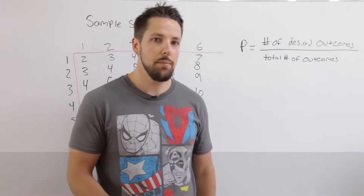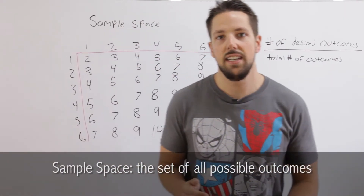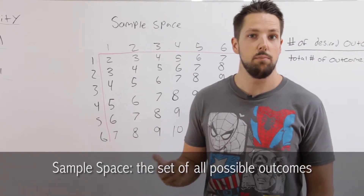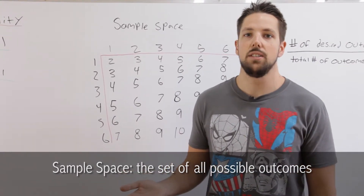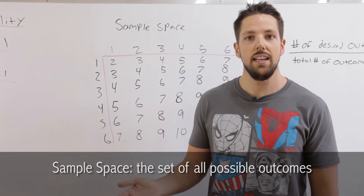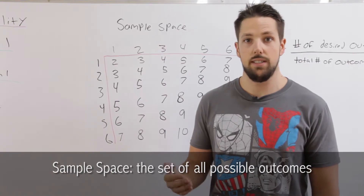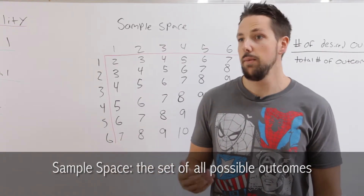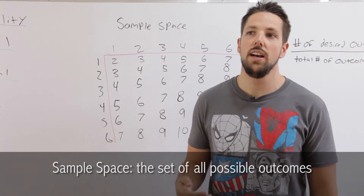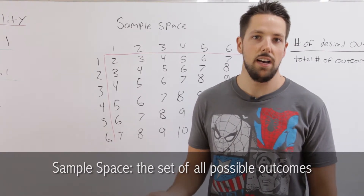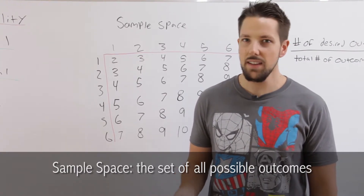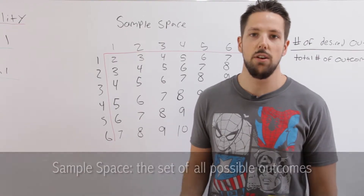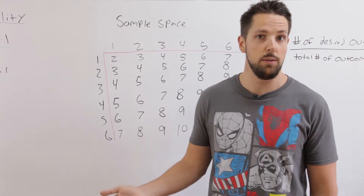The sample space is the list of every possible outcome in the probability experiment. So if we roll a die, the sample space is the numbers one to six. If you're picking from 10 blue socks, five red socks, and six green socks, the sample space is going to be red, blue, or green, because those are the only possible outcomes.